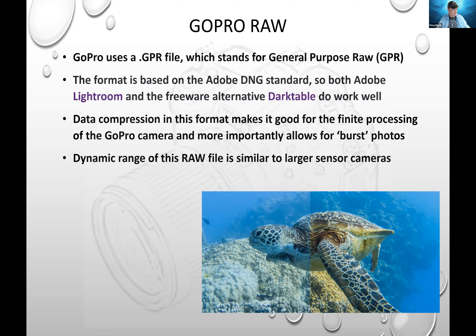The data compression that GoPro has been doing has allowed them to compress these raw files more — because these are little cameras with finite battery resources and finite processing power. But in the latest cameras, this actually allows them to do burst photography with raw images — you press the button and it takes multiple photos in a row, useful if a subject is moving past you or you just want to ensure you got the shot.